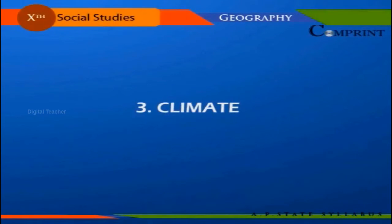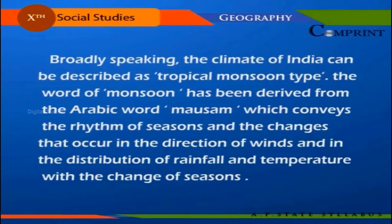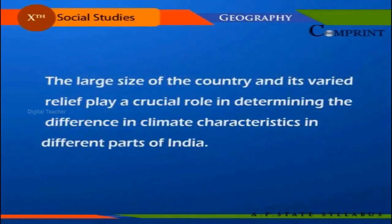Broadly speaking, the climate of India can be described as tropical monsoon type. The word 'monsoon' has been derived from the Arabic word 'mossam', which conveys the rhythm of seasons and the changes that occur in the direction of winds and in the distribution of rainfall and temperature with the change of seasons. The large size of the country and its varied relief plays a crucial role in determining the differences in climatic characteristics in different parts of India.